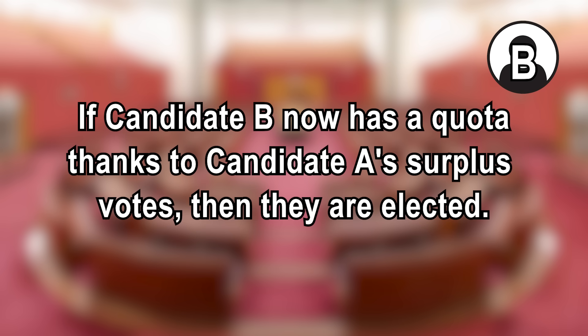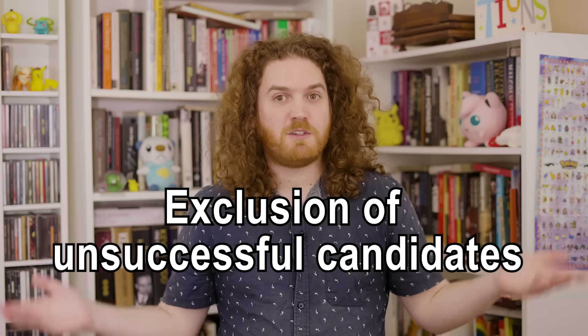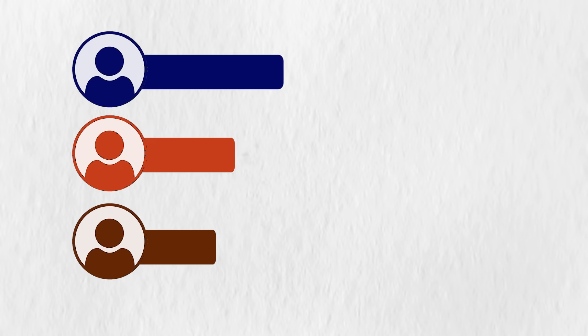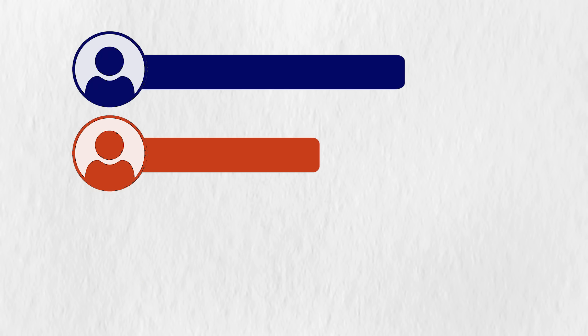If candidate B now has a quota thanks to candidate A's surplus votes, then they are elected. If candidate B now has any surplus votes themselves, a transfer value would be calculated and votes would be transferred in the same way. If all surplus votes from elected candidates are transferred but there are still spots to fill, then we get to exclusion of unsuccessful candidates. The candidate with the least number of votes is excluded and the preferences on their ballot papers are distributed to those who survived. It's possible someone can get a quota this way, surplus votes are then transferred again before another exclusion happens. This repeats until all quotas are determined.